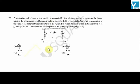A conducting rod of mass m and length l is connected by two identical springs as shown in the figure. Initially the system is in equilibrium. A uniform magnetic field of magnitude B directed perpendicular to the plane of paper outwards also exists in the region. If a current I is switched on that passes from P to Q through the rod, find the further maximum elongation in the spring given that magnitude of ILB is equal to mg.